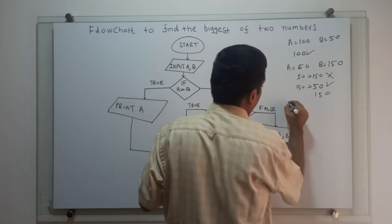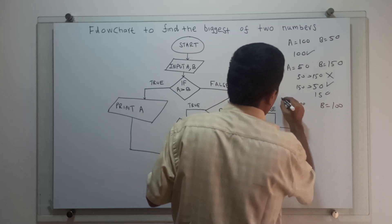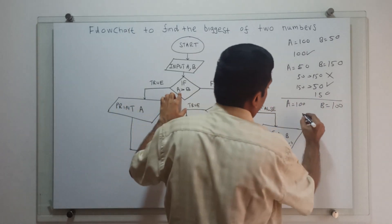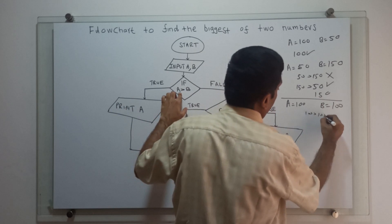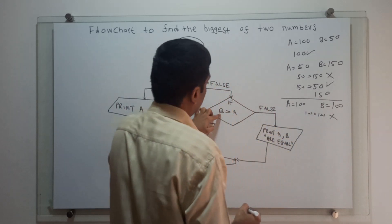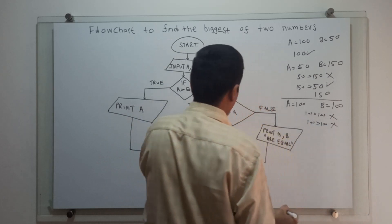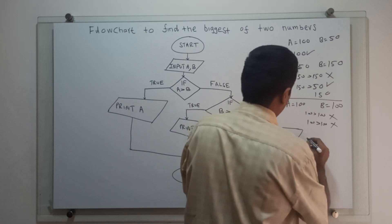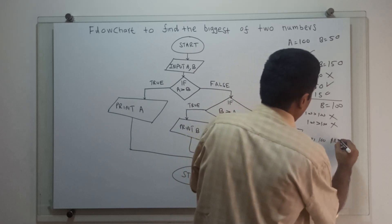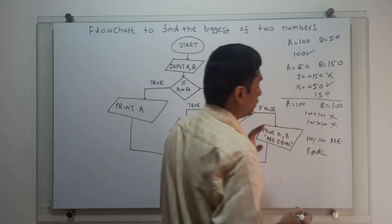If I am giving A equal to 100, B equal to 100, what will happen? If we check 100 greater than 100 — A greater than B — is false. Again we will check B greater than A: 100 greater than 100 is also false. So it will print that A and B — 100 and 100 — are equal.